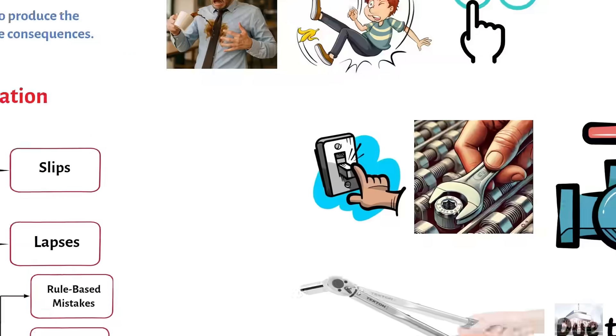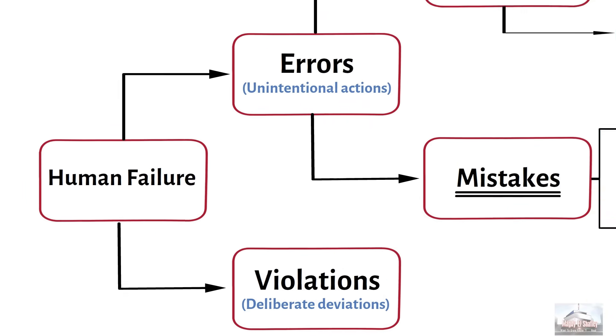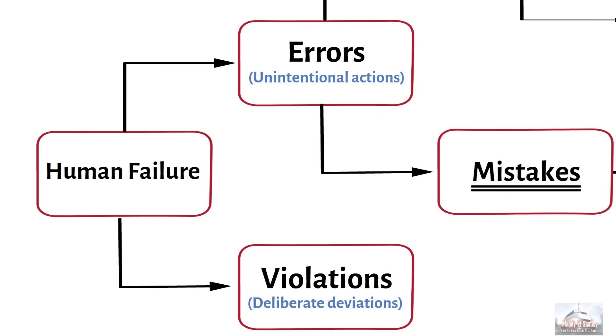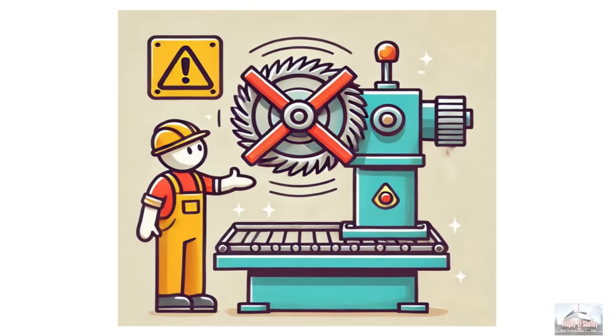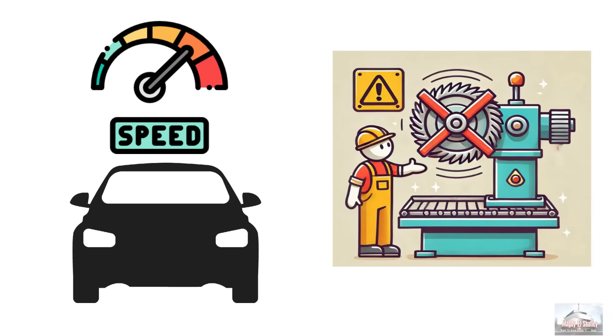Now let's talk about the second type of human failure. Violations. So, what exactly is a violation? A violation happens when someone deliberately deviates from rules, procedures, instructions, or regulations. For example, removing the guard on dangerous machinery or exceeding the speed limit when driving too fast on a road.